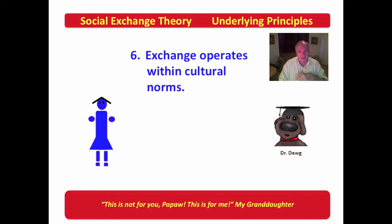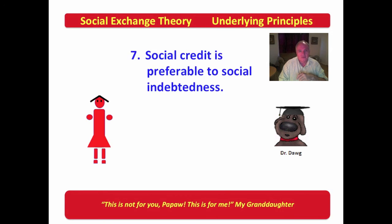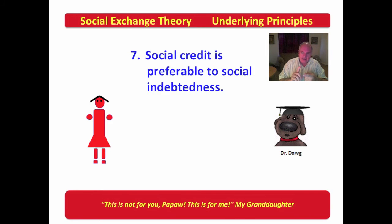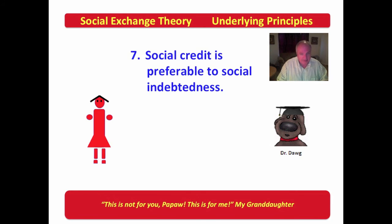Social credit is preferable to social indebtedness. When we enter into relationships and measure what we have to pay — the cost — against the benefit, we want to come out on top. We don't want to be shorted. We want to make profit, not lose profit. We want to gain rather than fall back.